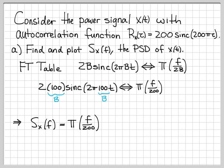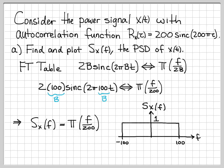So our power spectral density is this equation, and we can plot it as a function of frequency. It has a total width of 200, so it extends from minus 100 to 100, and it has a height of 1. So this is the power spectral density for this power signal x(t) whose autocorrelation function was given in the problem.